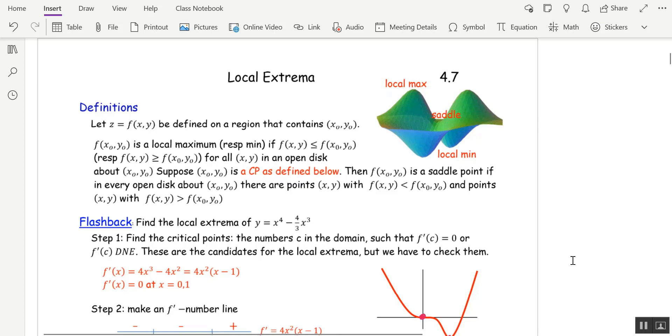Welcome to 4.7. Today we're going to look for local extrema. Local maxes on a surface are the largest point around, local mins are the smallest point around, and saddles look like local maxes from one direction and they look like local mins from the other direction, so they're neither.